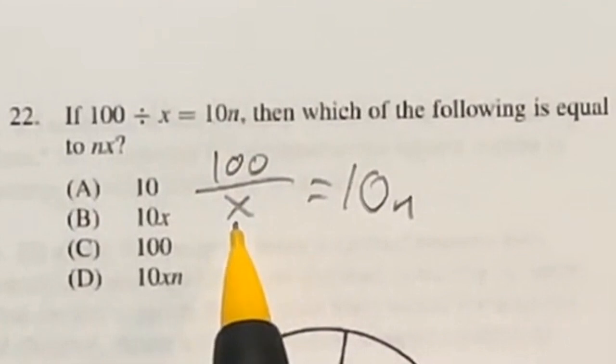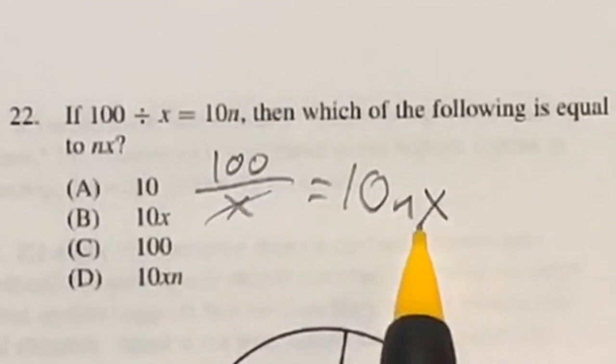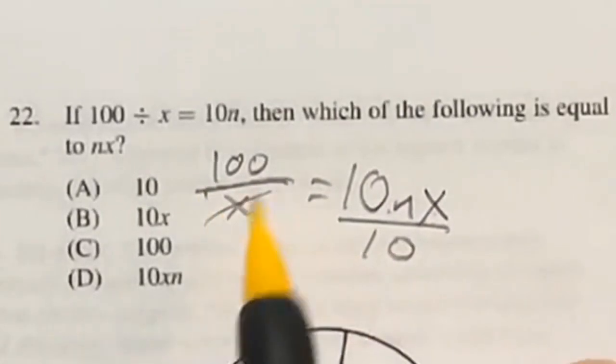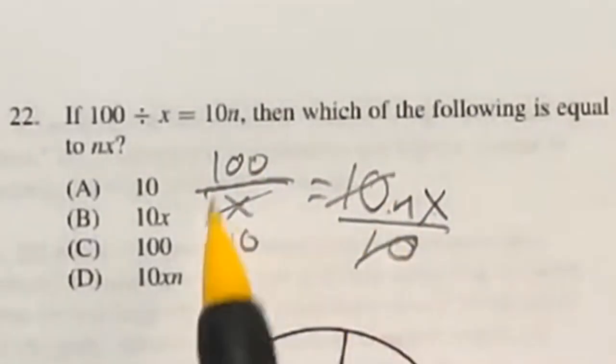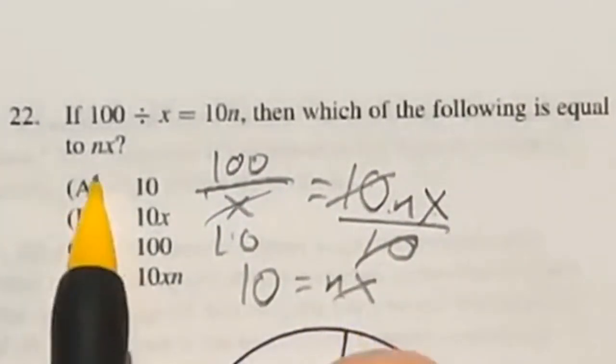Well, the opposite of dividing is multiplying, so I'm going to multiply this x to the other side. So that cancels it out over here and puts in x here. Then, to get rid of this 10, it's currently being multiplied by these two, so I'm going to divide both sides by 10. Now, 100 divided by 10 is going to give me 10 equals nx, which is answer A.